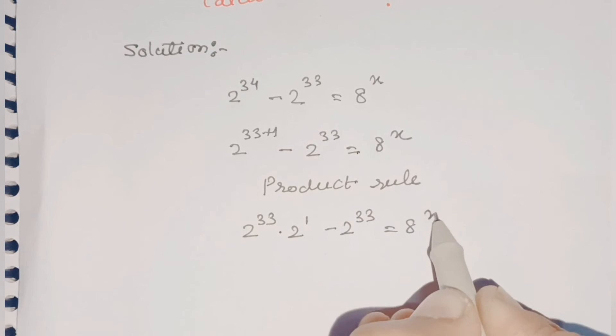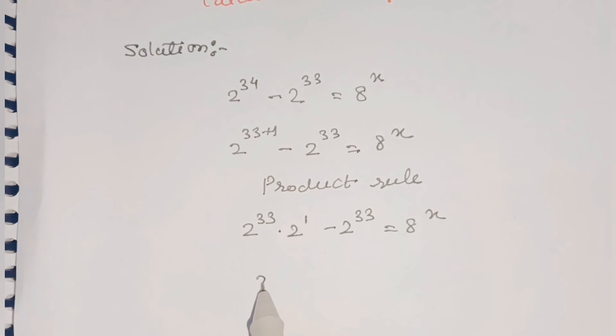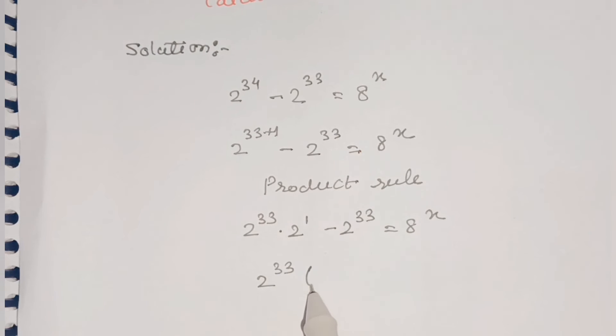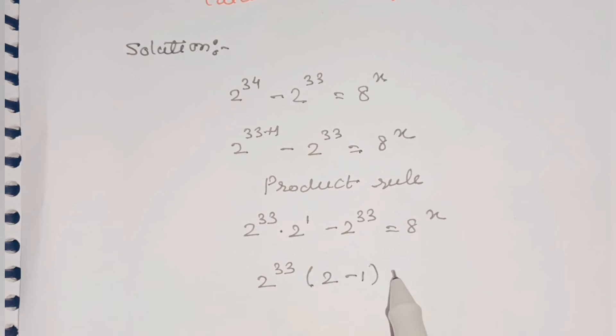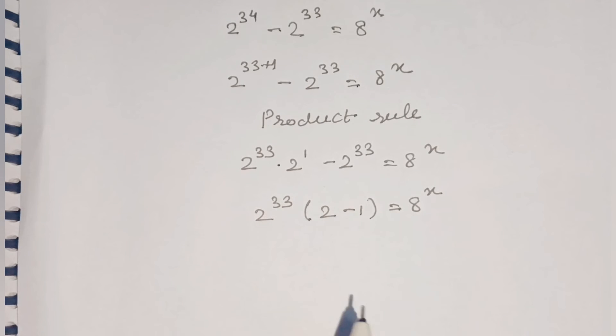Let's take 2 raised to 33 common, so the remaining terms are 2 raised to 1, that is 2, minus 1, is equal to 8 raised to x.